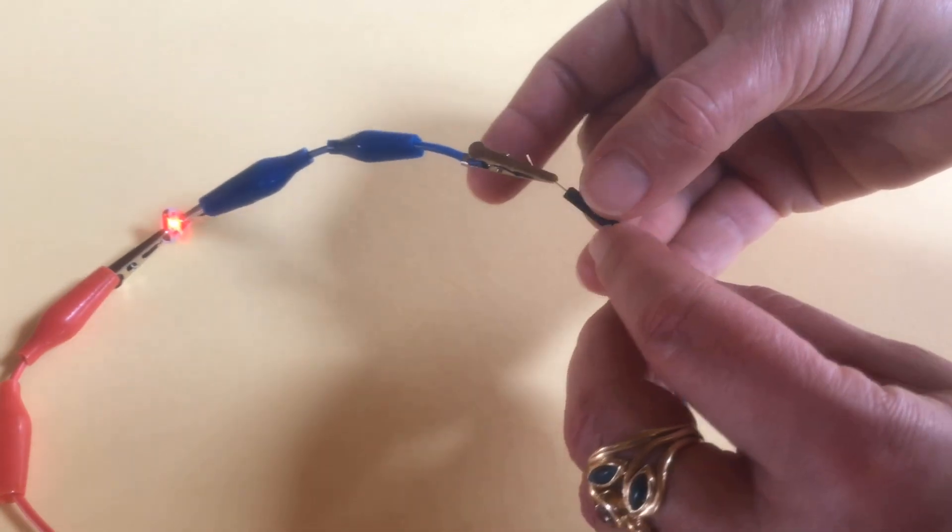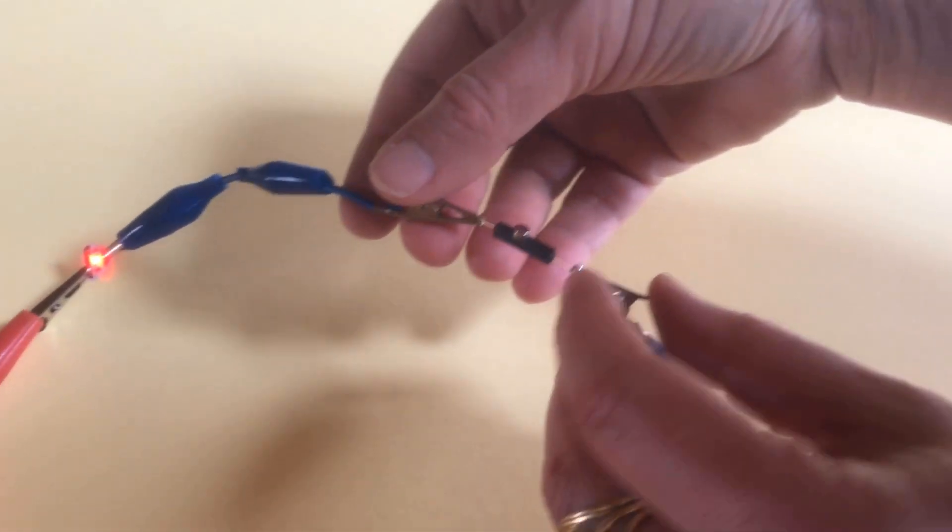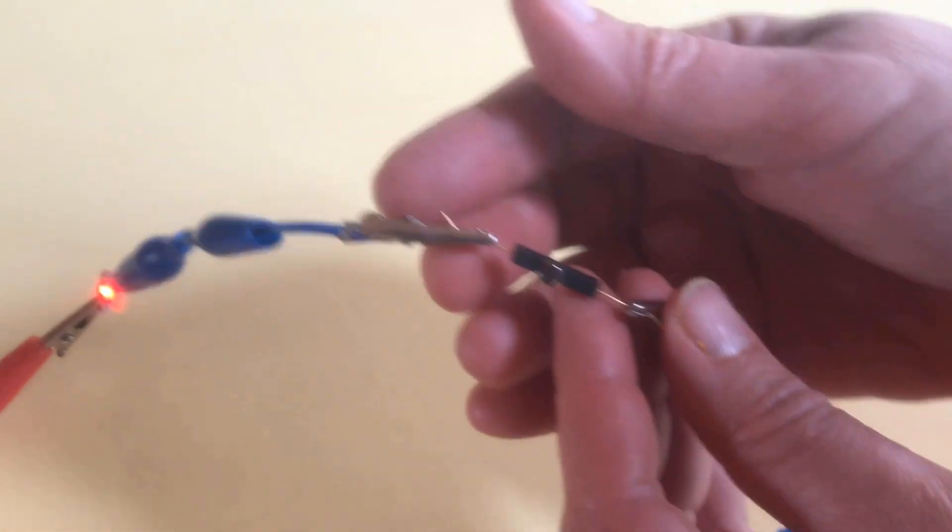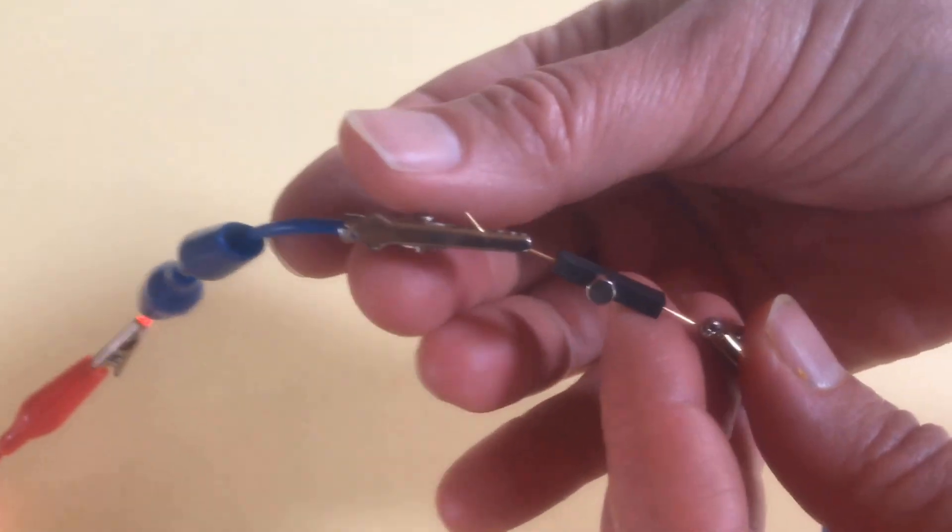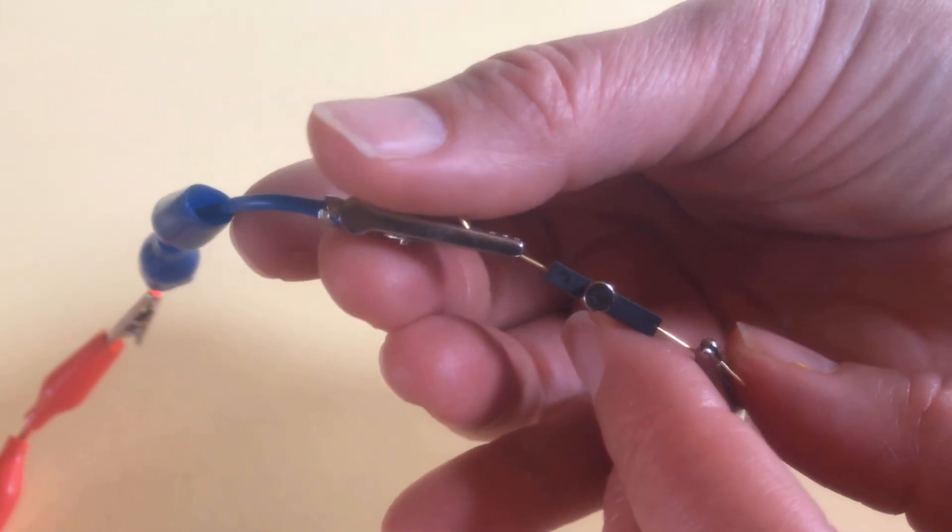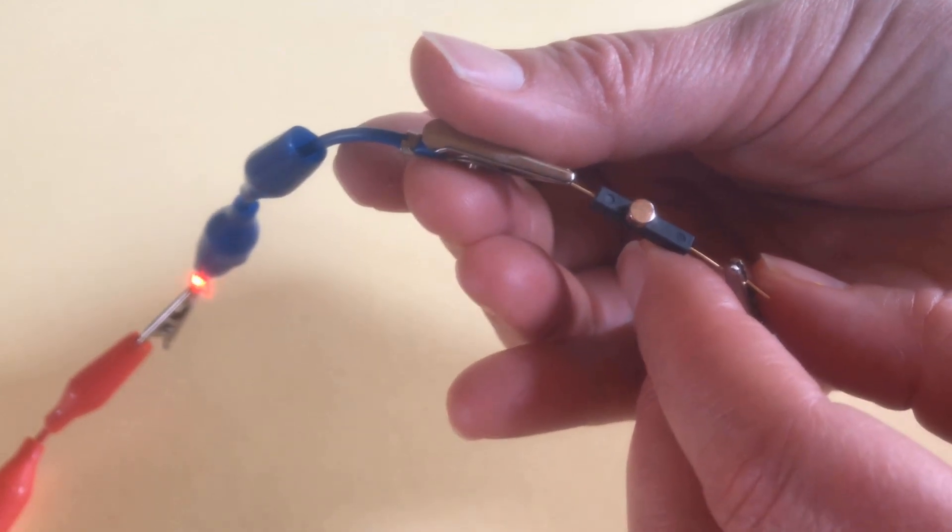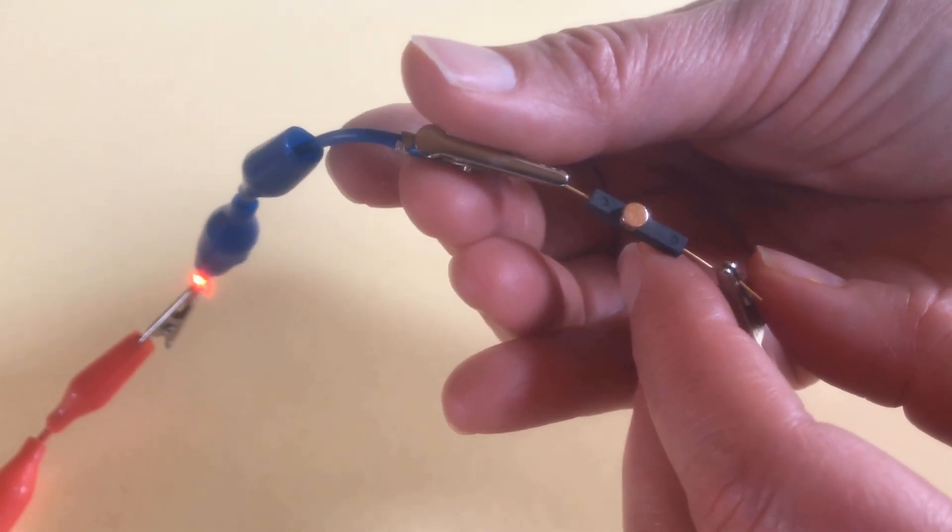In the event that the side of the reed switch that you've chosen doesn't have recessed circles or some kind of visual cue to help you keep track of it, it's good practice to leave the magnet in place when you remove the alligator clips from the reed switch.